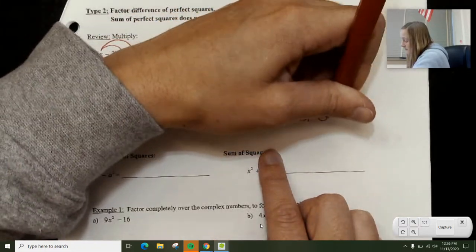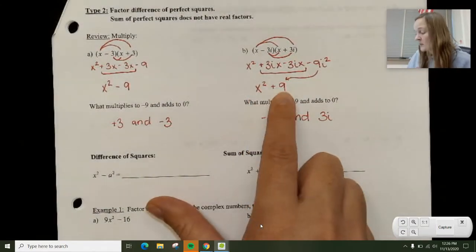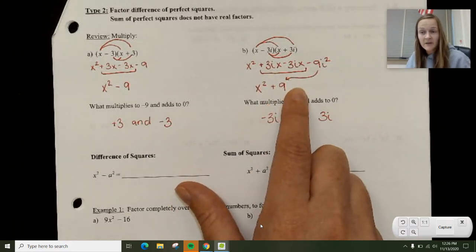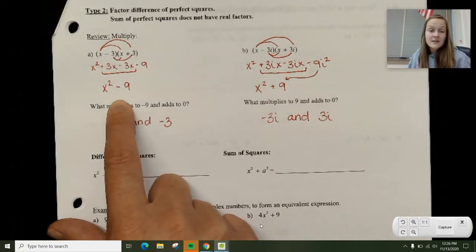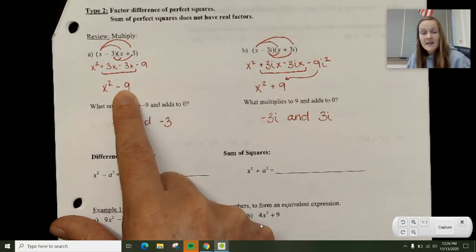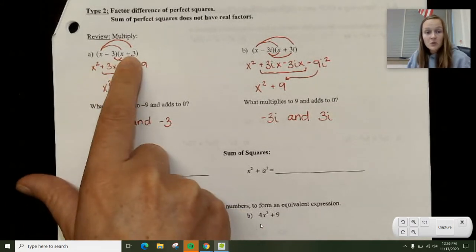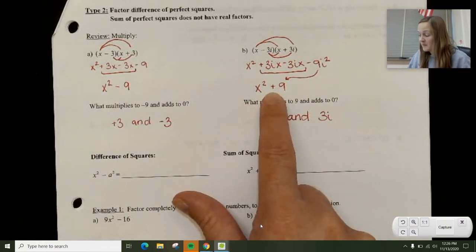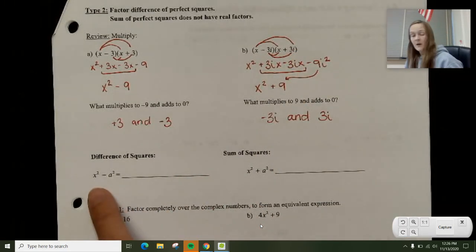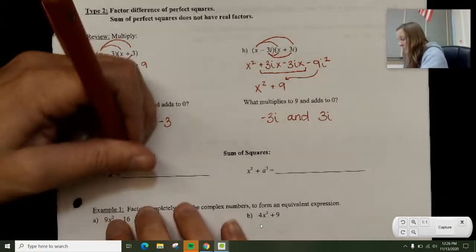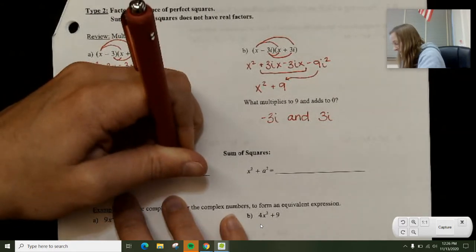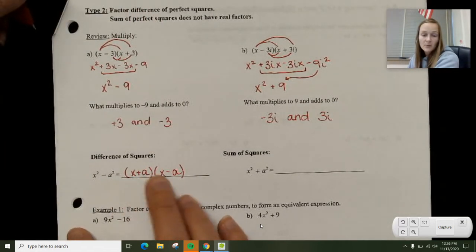This here, x² + 9, is called a sum of squares because x² and 9 are both perfect squares and the sum is the plus sign. This here is called a difference of squares. Same reason for the squares, but the difference is the minus sign. Notice the difference of squares came from two real factors. The sum of squares came from two imaginary factors. So for a difference of squares, if you have x² - a², you end up with (x + a) and (x - a).